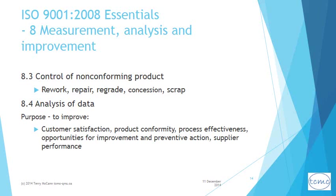According to clause 8.3, a documented procedure must be established for controlling and dealing with non-conforming product. The first obligation regarding non-conforming product is to identify it as such and prevent its unintended delivery or use. There are various ways that the standard permits for dealing with non-conforming product; if it is reworked or repaired as a correction, it must be re-verified to demonstrate conformity. 8.4 requires data from various sources to be collated, analyzed, and trended for the purpose of improving customer satisfaction, supplier performance, product quality, and process effectiveness, as well as to identify opportunities for improvement and preventive action.